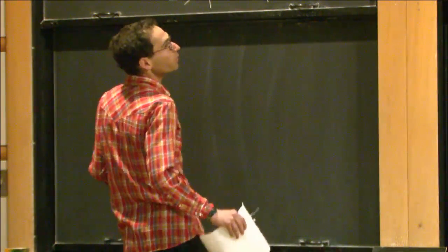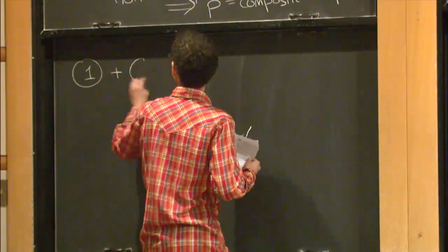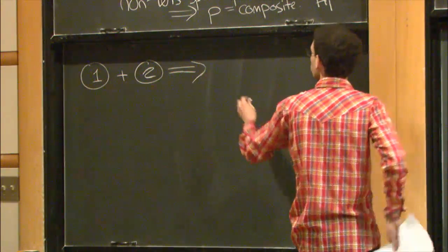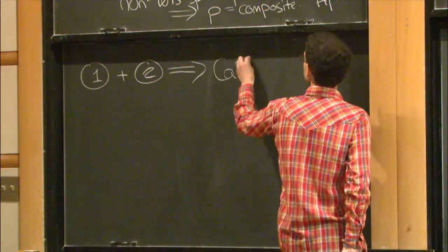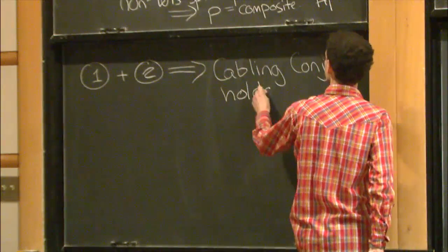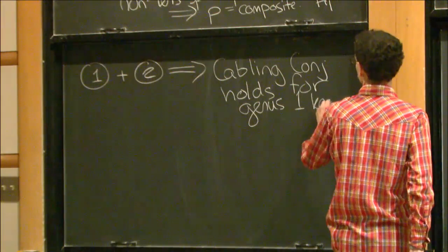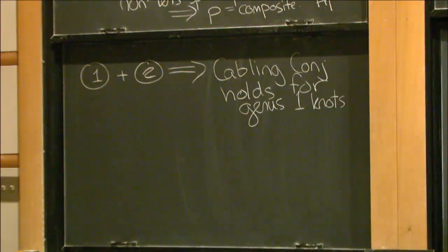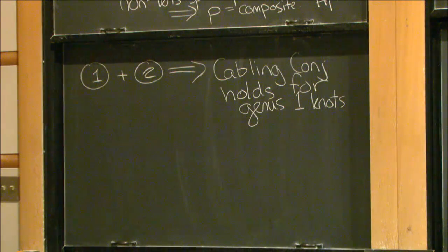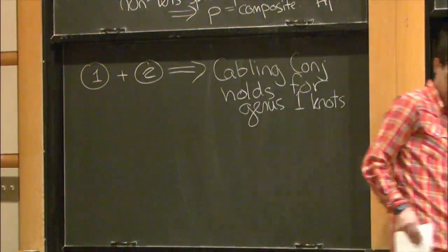Combining results one and two together shows the Cabling Conjecture holds for genus-one knots—originally proved by Boyer and Zhang, but also a quick corollary of these two properties. So we'll be interested in knots with large genus today.